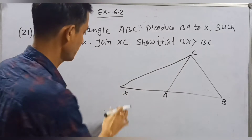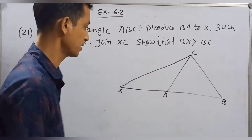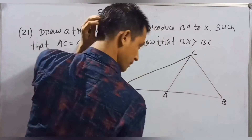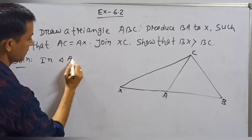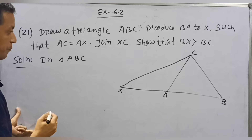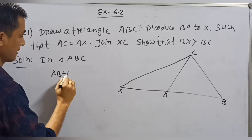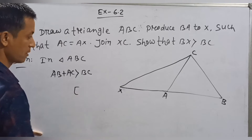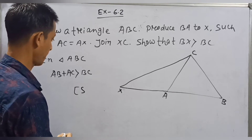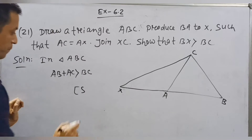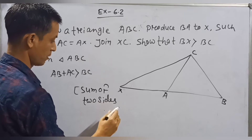Now we have AX and XC. We need to show that BX is greater than BC. In triangle ABC, AB plus AC is greater than BC, because the sum of two sides in a triangle is greater than the third side.